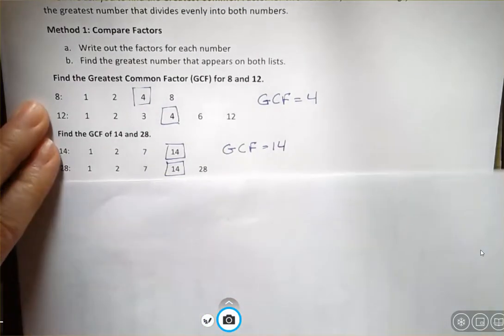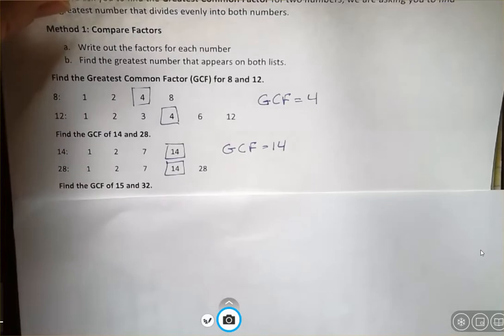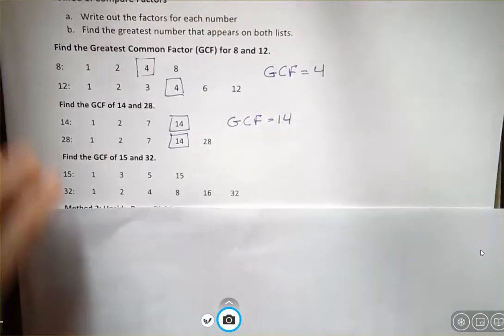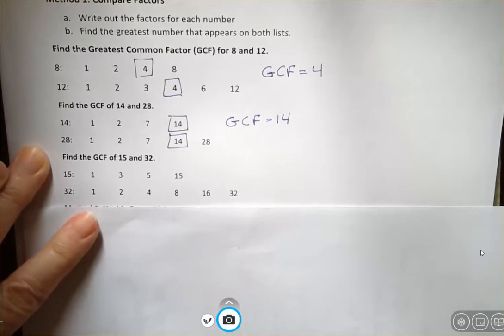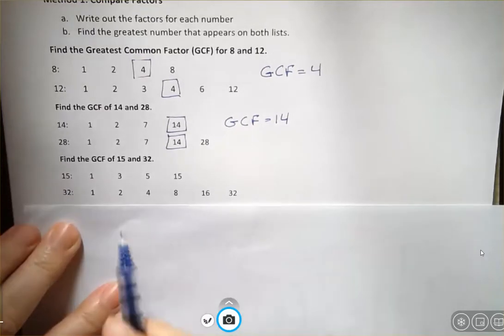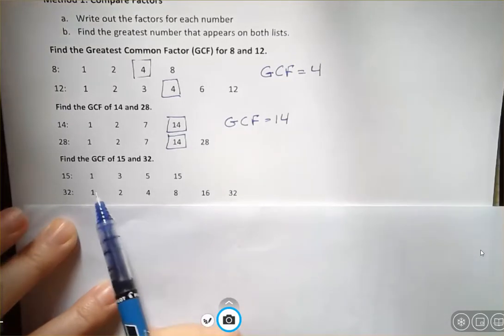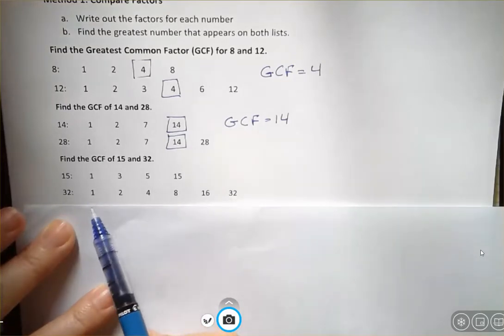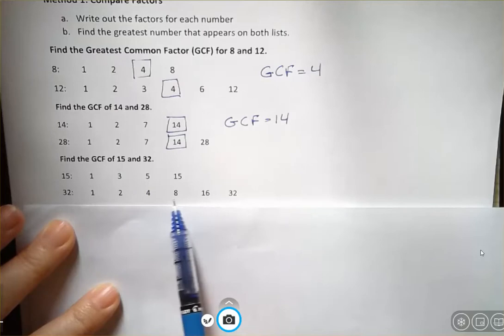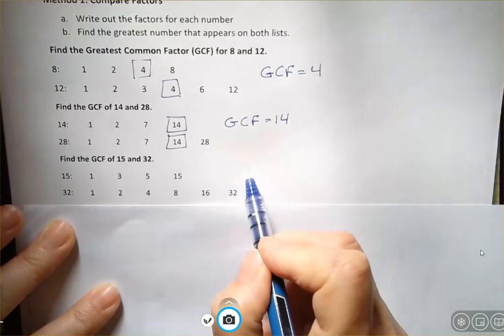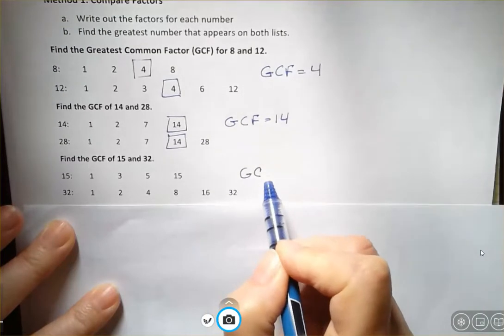And the next one we have is find the GCF of 15 and 32. So if I list out the factors of 15, I have one, three, five, and 15. And for 32, I have one, two, four, eight, 16, 32. And if we look through here, we can see that they of course have a one in common because everything has a one. But that's it. There's no other common factors between 15 and 32.